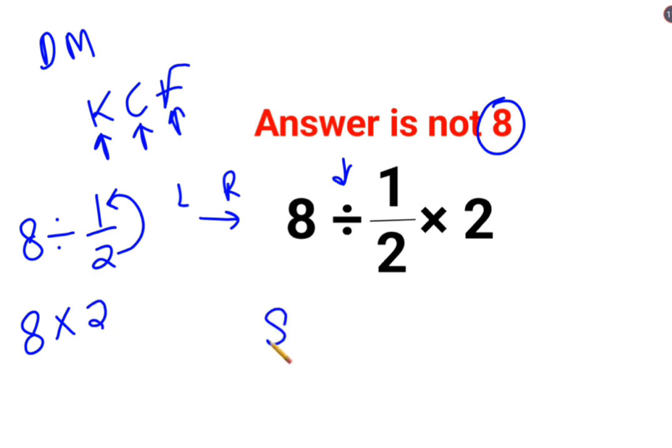So you get this as what? 8 multiplied by 2 multiplied by 2. So 8 multiplied by 2 is 16 multiplied by 2. Answer for this question is supposed to be 32.